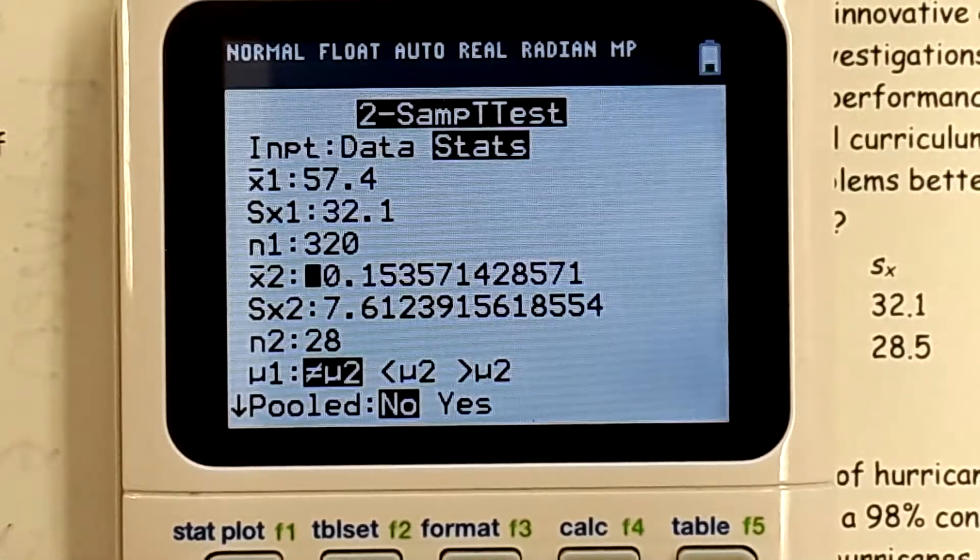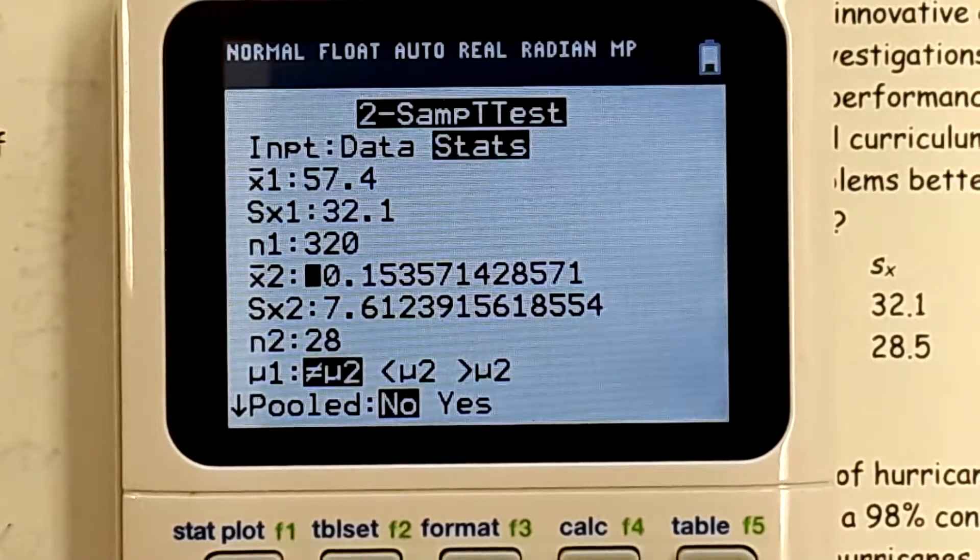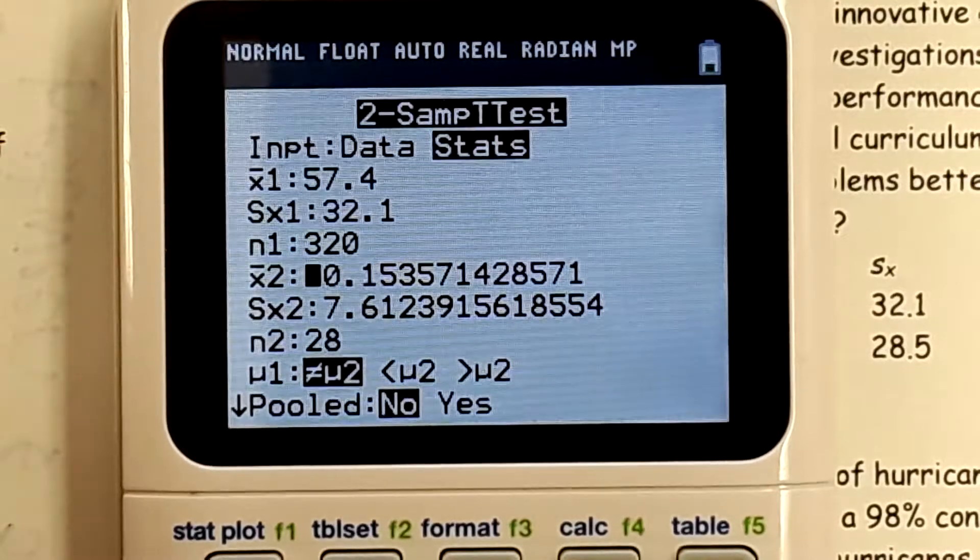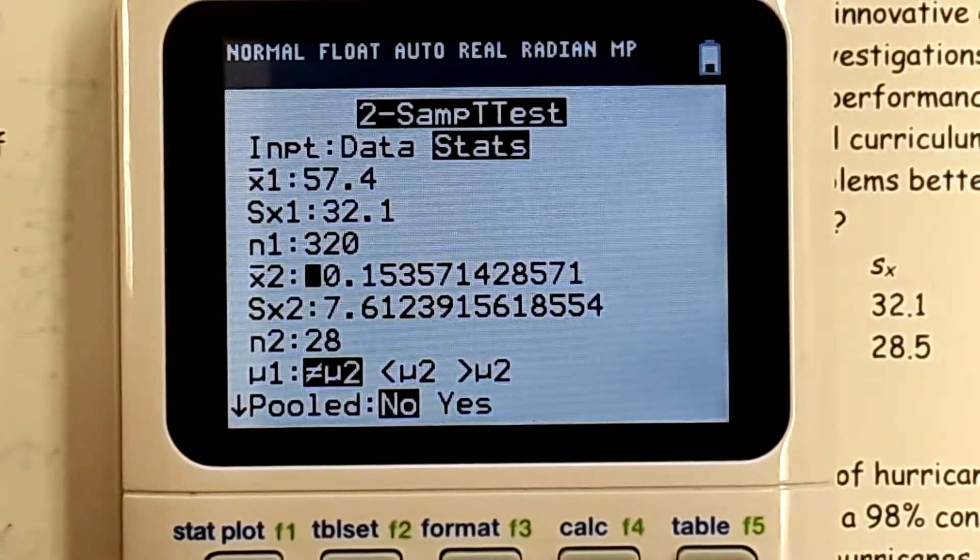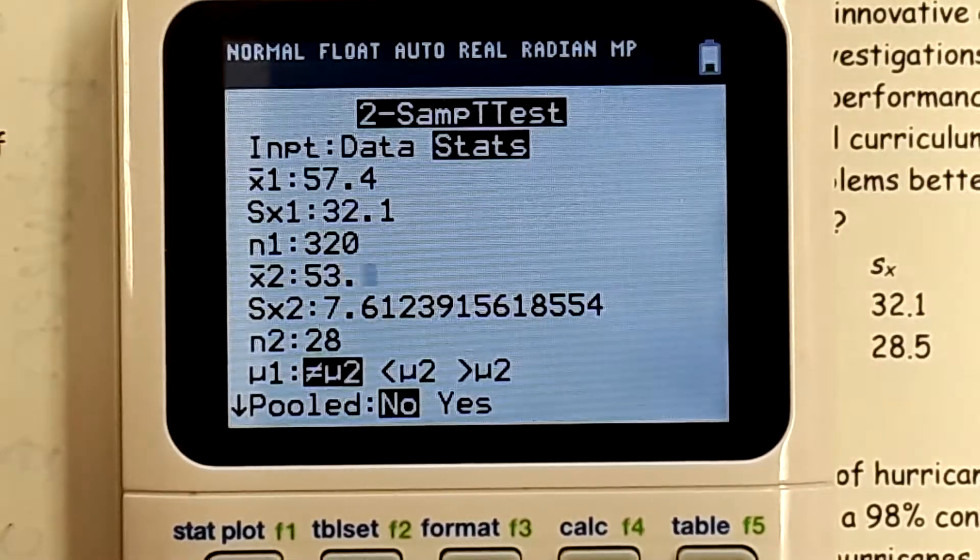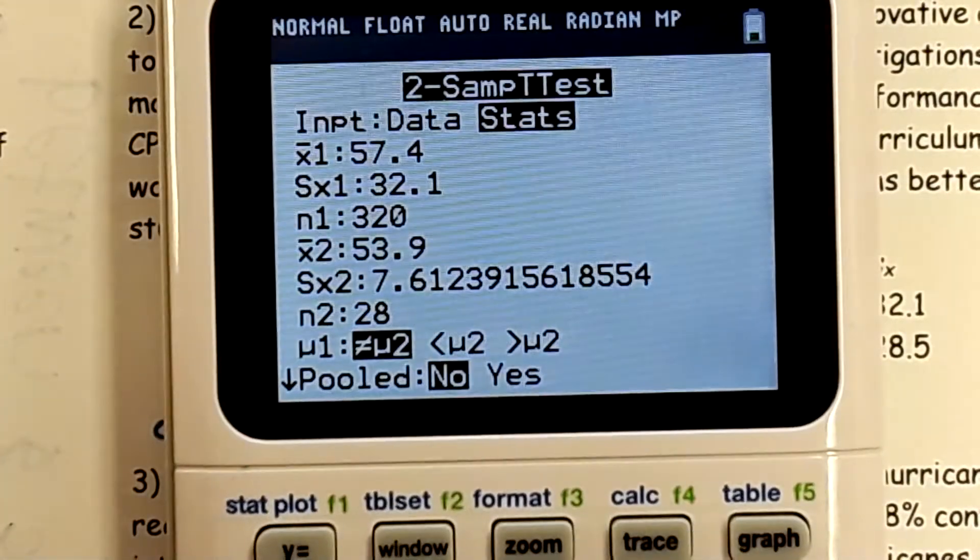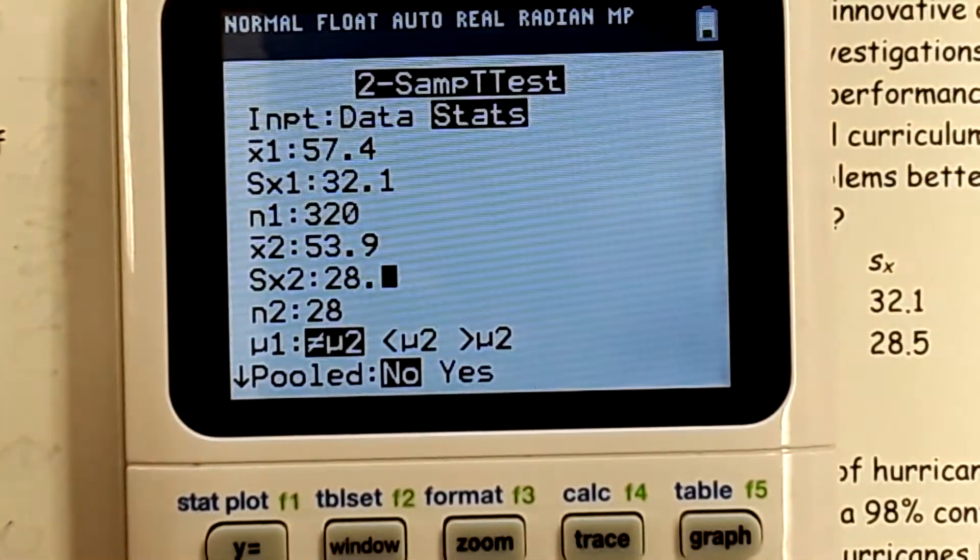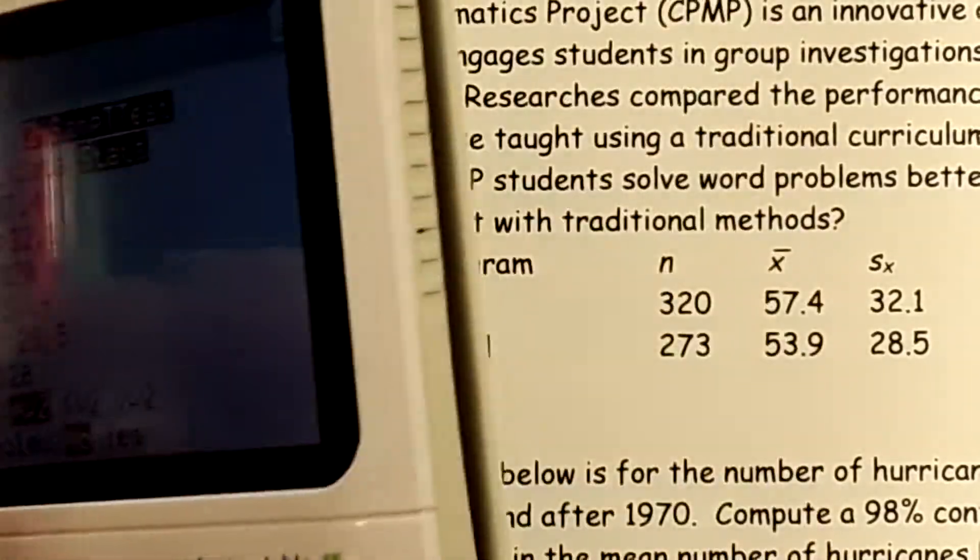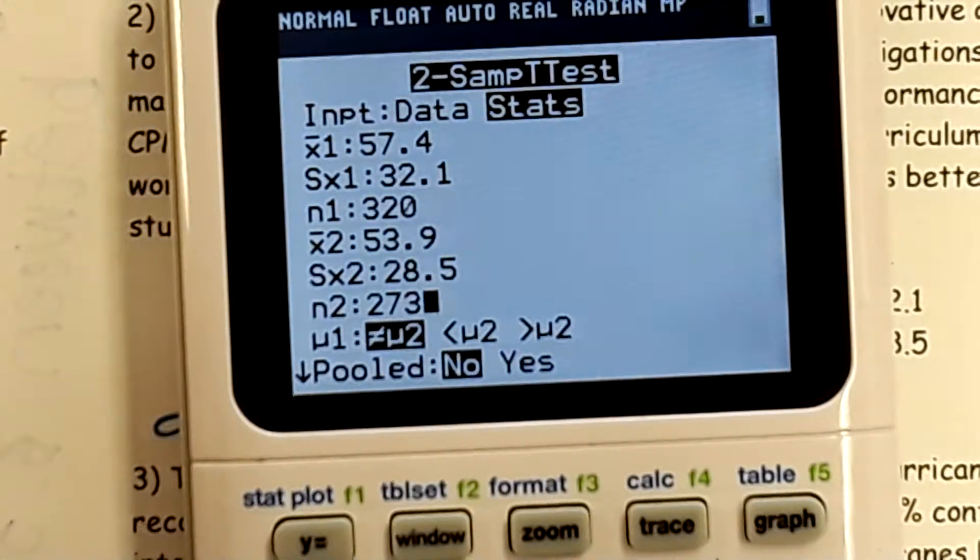Okay. Mean 2? 53.9. And how many people? 273. Okay.